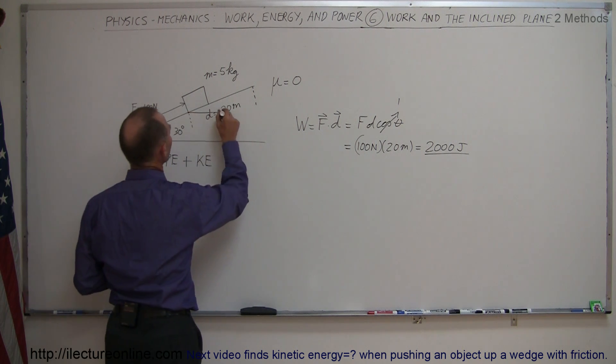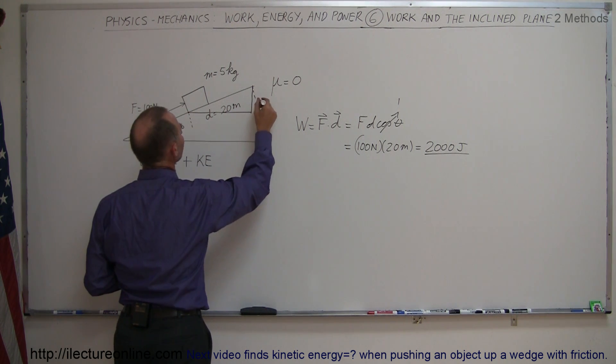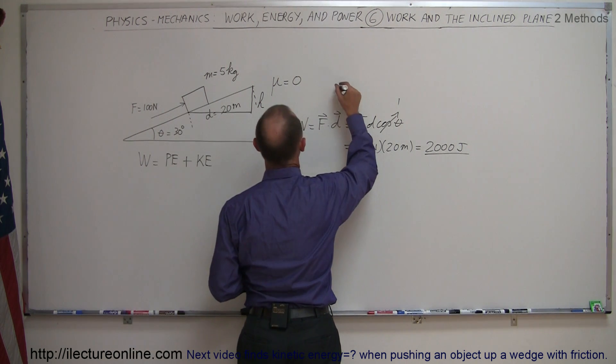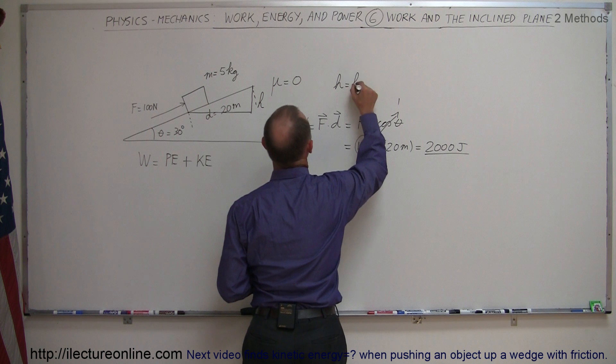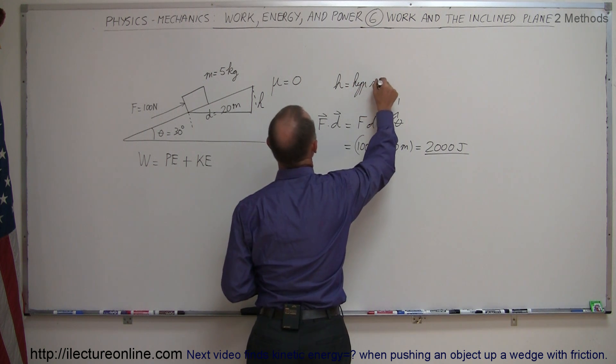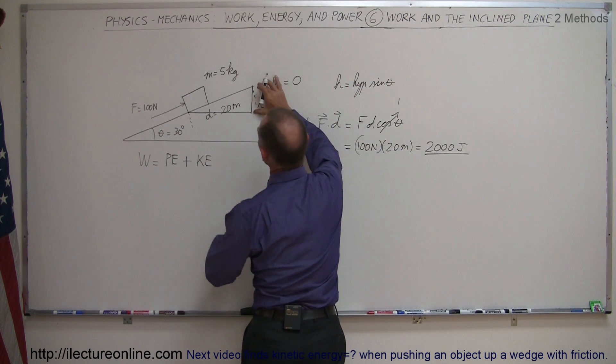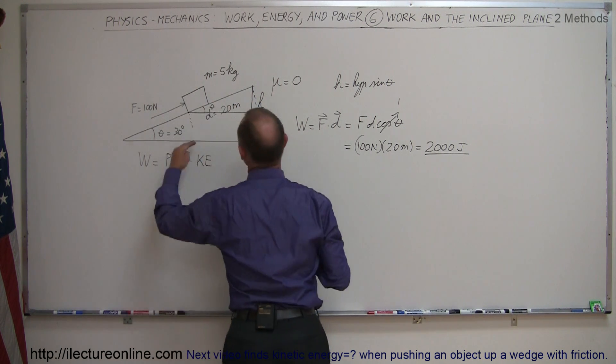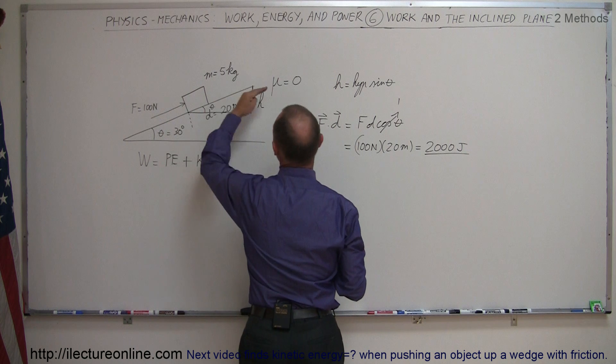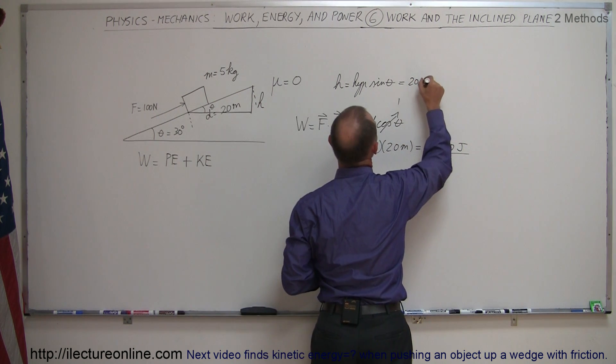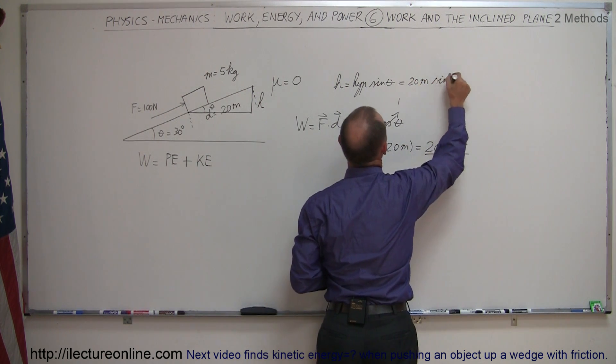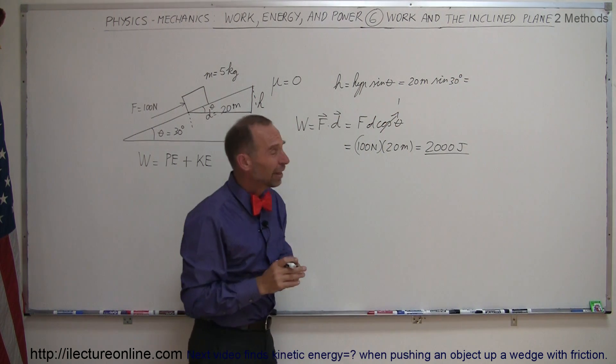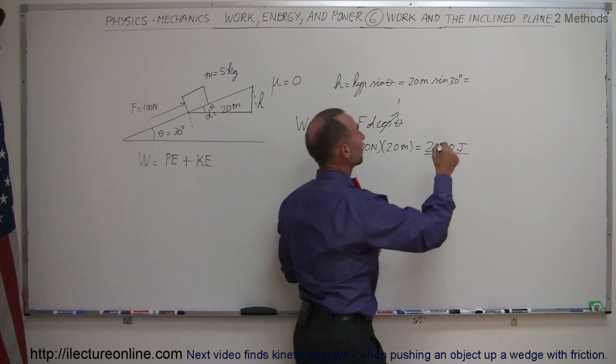If we now draw a triangle here, we can see that this is the height gained h, and if we're going to calculate h, h is equal to the hypotenuse times the sine of the angle theta, because h is opposite to the angle, of course this is also the angle of theta, 30 degrees. The distance 20 meters is along the hypotenuse, so this is equal to 20 meters times the sine of 30 degrees, which is of course sine of 30 degrees is one-half, and one-half times 20 meters is 10 meters.